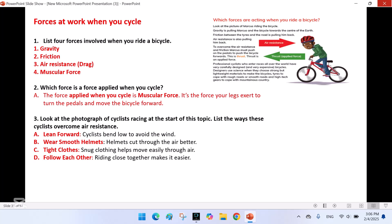Forces at work when you cycle. List four forces involved when you ride a bicycle. Gravity, friction, air resistance, muscular force. Which force is a force applied when you cycle? The force applied when you cycle is muscular force. It's the force your leg exerts to turn the pedals and move the bicycle forward. Look at a photograph of cyclists racing at the start of this topic. List the ways these cyclists overcome air resistance. Lean forward, cyclists bend low to avoid the wind. Wear smooth helmets. Helmets cut through the air better. Tight clothes, snug clothing helps move easily through air. Follow each other. Riding close together makes it easier.